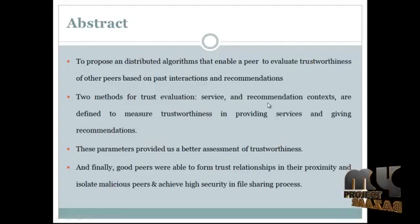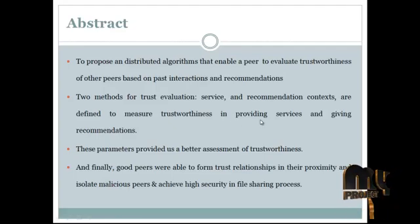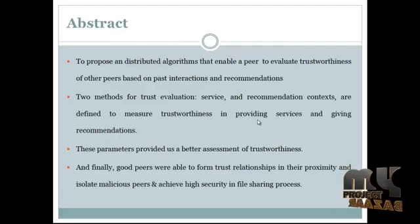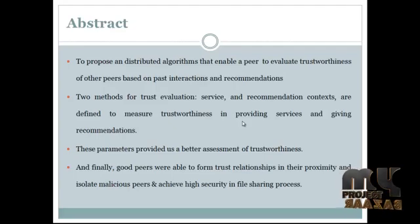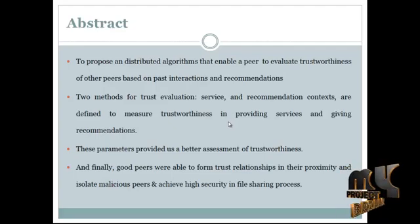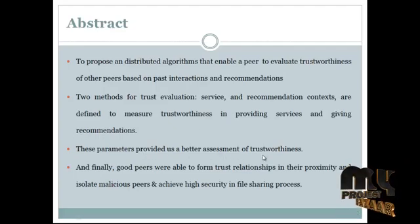The first method is service and recommendation content, defined to measure trustworthiness in providing services and giving recommendations. The interactions and recommendations are evaluated based on importance, resonance, and peer satisfaction parameters. Additionally, a recommender's trustworthiness can be evaluated based on the recommender's feedback about the service process. Quality of service is calculated based on past interactions and recommendations, providing a better assessment of trustworthiness.